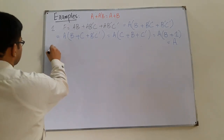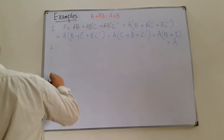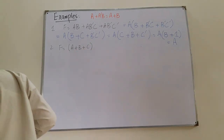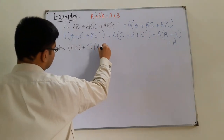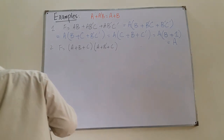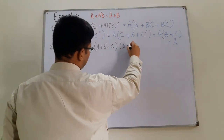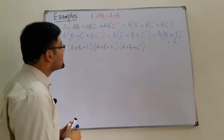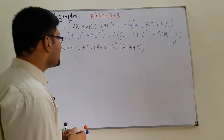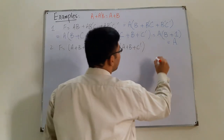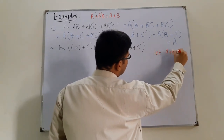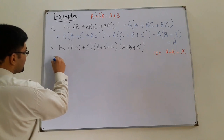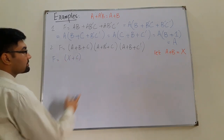The second question: f = (A+B+C)(A+B'+C)(A+B'+C'). You have to apply Boolean algebra rules and simplify. For simplification, I let X = A+B, so the first factor becomes X+C.